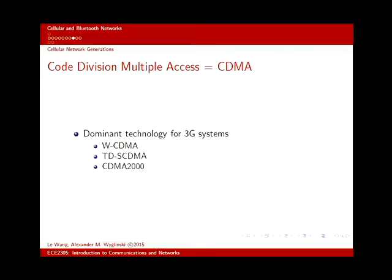Everyone believed CDMA would give infinite capacity by spreading signals across a wide band — hundreds of signals in the same band. What they didn't realize is that with a hundred people on top of each other frequency-wise, they self-interfere. You don't achieve that theoretical capacity. Plus, the actual CDMA hardware was complicated and expensive to implement.